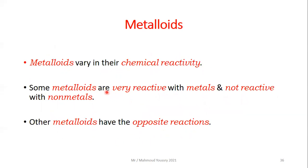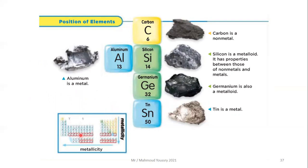Metalloids vary in their chemical reactivity — some are very reactive with metals but not with non-metals, while others show the opposite. Looking at the periodic table, we can see the trend: aluminum is a metal, carbon is a non-metal, silicon is a metalloid, germanium is also a metalloid, and tin is a metal. This confirms that metallic properties increase toward the bottom of each column and toward the left of each row.